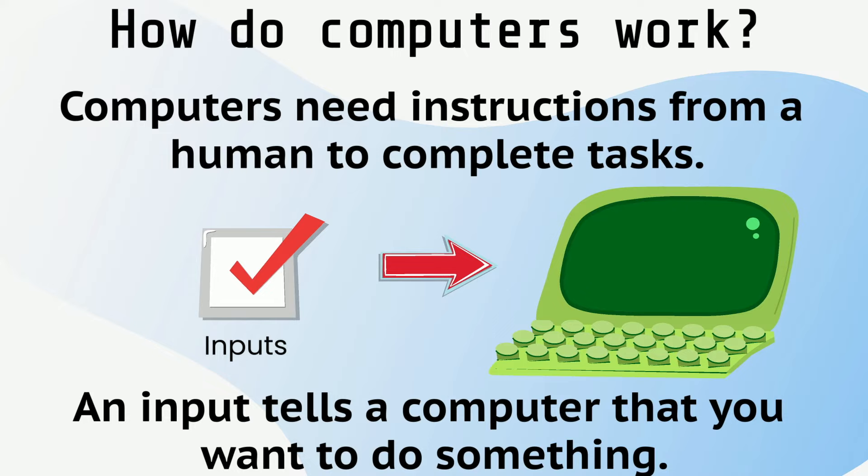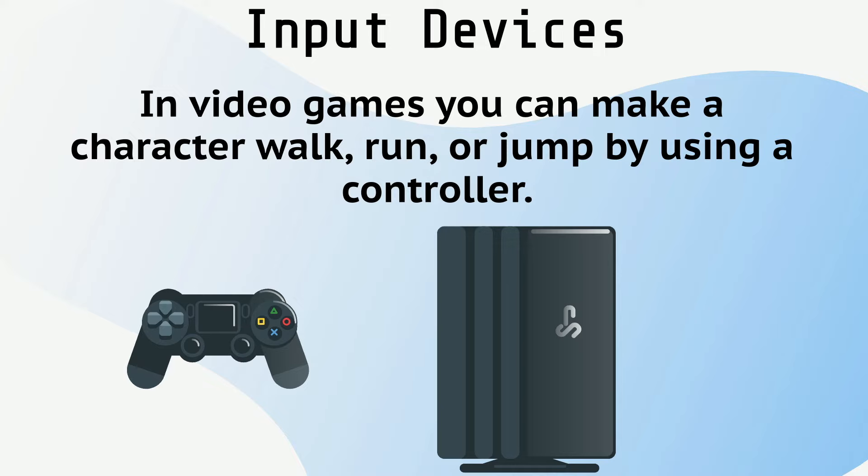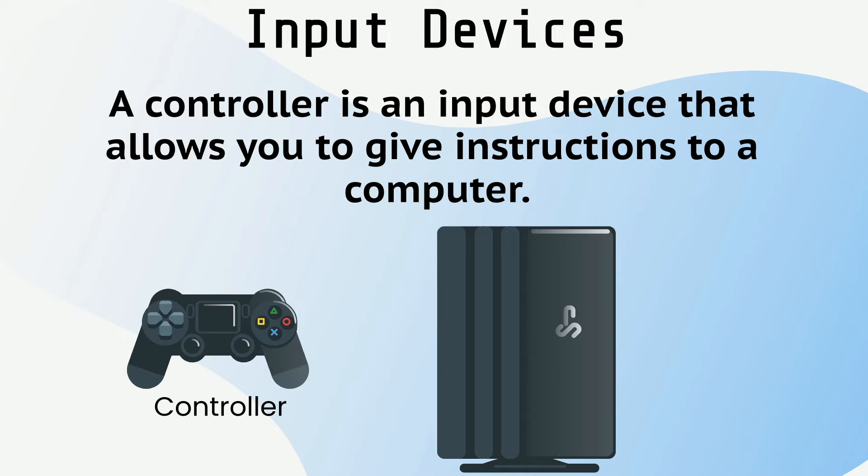In video games, you can make a character walk, run, or jump by using a controller. A controller is an input device that allows you to give instructions to a computer, which in this example would be the video game system.